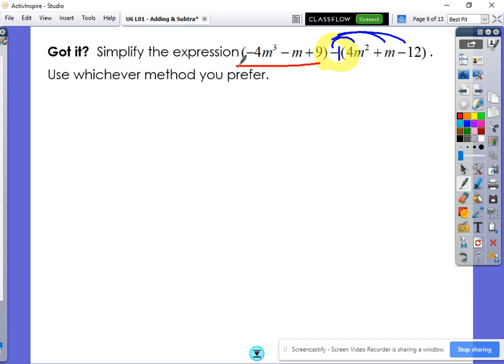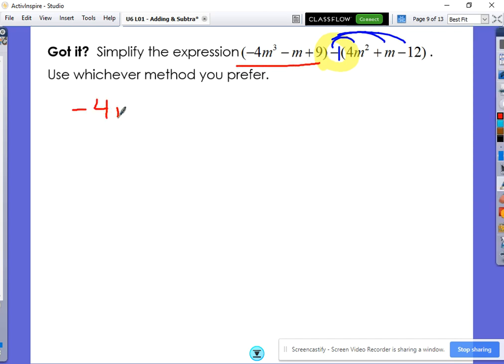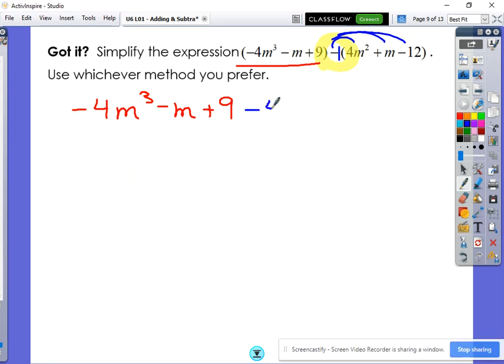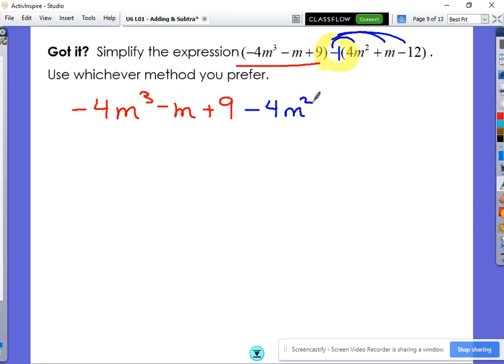The first three terms never change. So negative 4m cubed minus m plus 9. But my terms here definitely do change. Negative 4m squared, negative m, and positive 12.